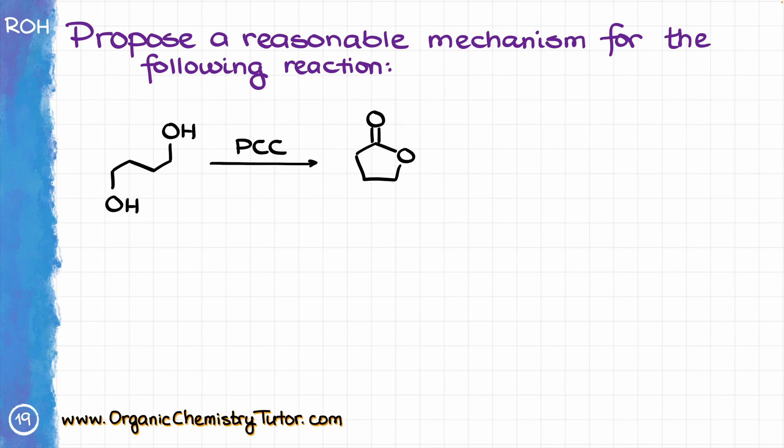In this case we have something rather odd going on. We have a primary alcohol over here, and we also have primary alcohol over here. Yet, for the final product we are not seeing two aldehydes, rather we see the formation of an ester. So what exactly is going on here? Let's look at the mechanism of this reaction and try to figure out what's going on.